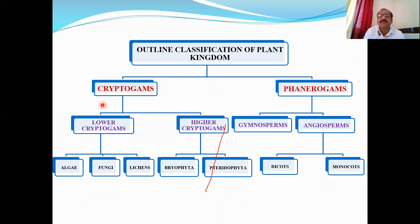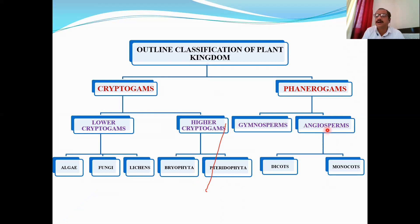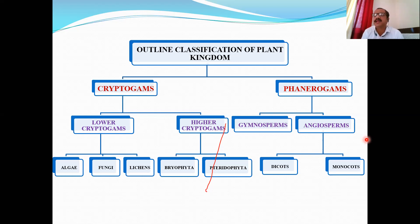All the technical terms — cryptogams, phanerogams, gymnosperms, angiosperms — are derived from Greek or Latin words that are no longer in everyday use, but these classical languages are well-suited for forming scientific terminology.